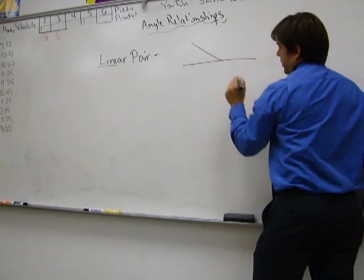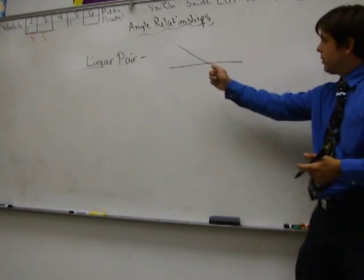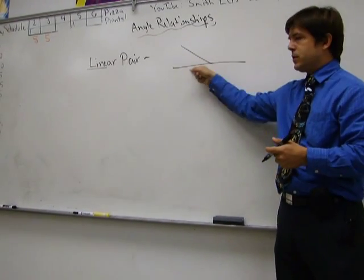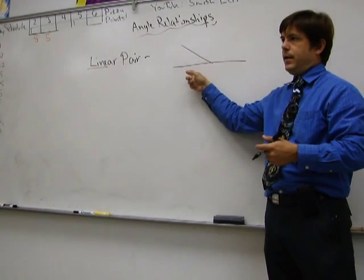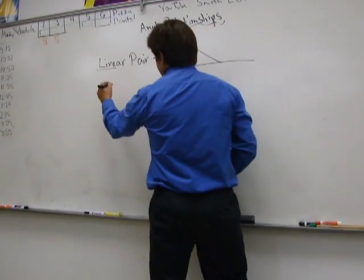So basically, that is a linear pair. This angle and this angle form a straight line together, and they add up to what? 180. So linear pairs add to 180.